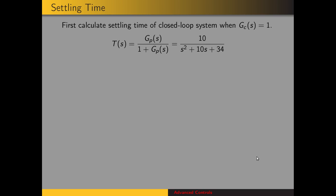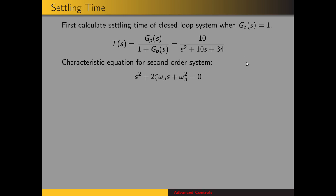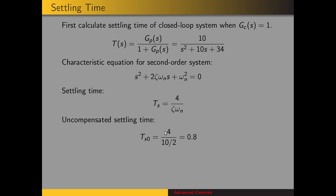Now we'll spend a few minutes on the continuous-time compensator design. In order to get the desired settling time, we need to know the uncompensated settling time. We'll let GC equal 1, giving us the closed-loop transfer function shown here. For a second-order system, we can find the damping ratio and natural frequency. The settling time is 4 over (zeta × omega_n), giving an uncompensated settling time of 4/5 = 0.8 seconds.